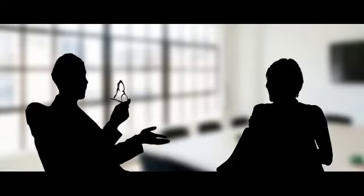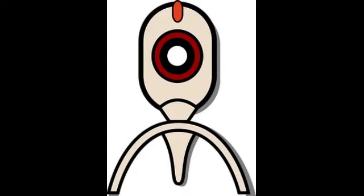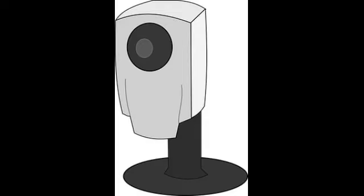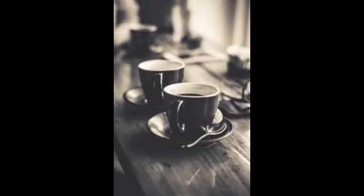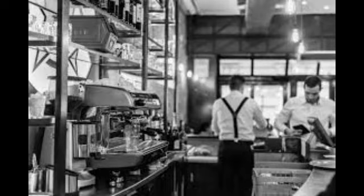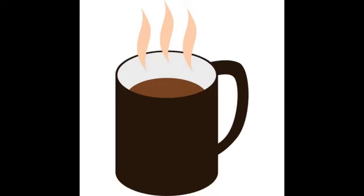Dr. Quentin Stafford-Fraser and Paul of the computer science department decided to invent a remote camera device to keep an eye on the coffee pot, to monitor when it was full and when it was empty. Hence, the first webcam ever invented was placed there to keep a check on the levels of coffee at the machine. Connected with an old computer in the lab, the webcam would generate a 129x129 pixel grayscale image at 1 frame per second of that delicious coffee.